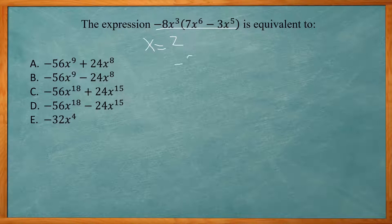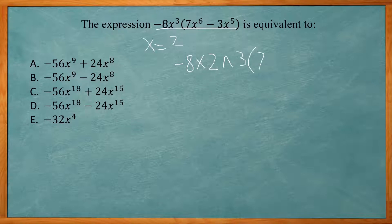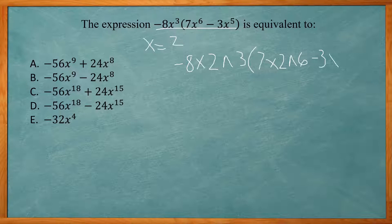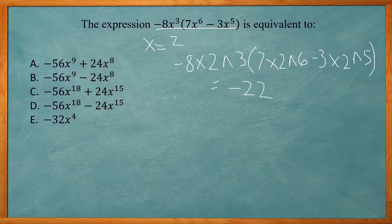Negative 8 times 2 raised to the third power, times the quantity 7 times 2 to the 6th minus 3 times 2 to the 5th. I'm going to put that in the calculator. That's going to give me negative 22,528.